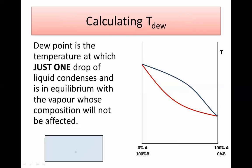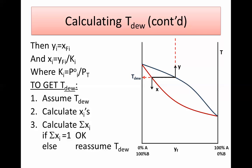The dew point is similar but you start with vapor and cool it until a tiny drop of liquid forms — that's why it's called the dew point. Once the drop forms it's in equilibrium with the gas phase, and the gas composition hasn't changed. Here y_feed = y, which is known, and you calculate x from y using x = y / K. You assume a dew point temperature, calculate x values, and check if the summation of x equals one. If not, assume another temperature.